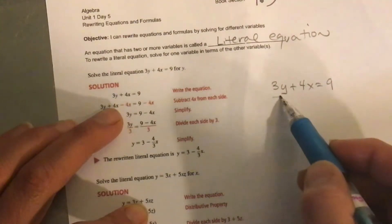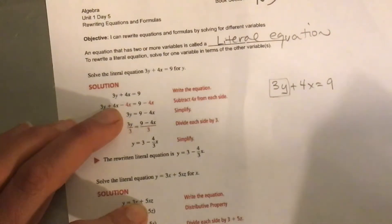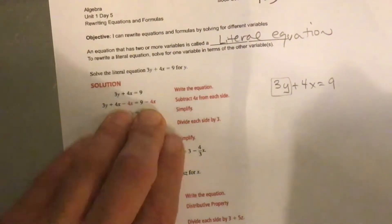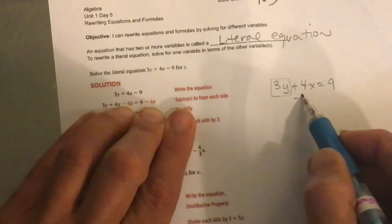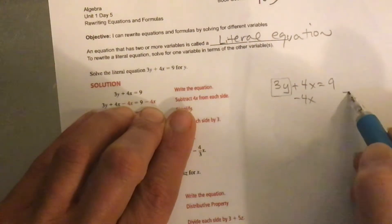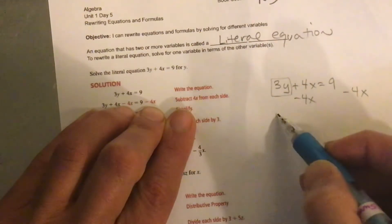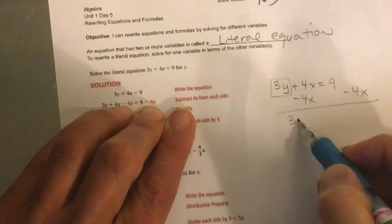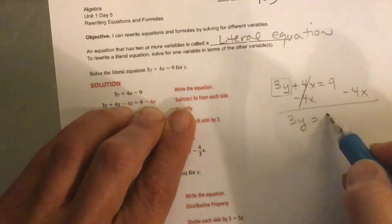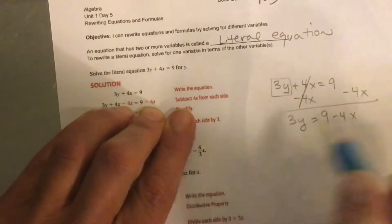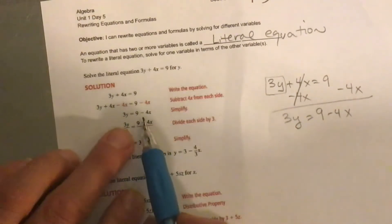So in my head, I think, well, I've got to box that variable term, right? And like they do, they subtract 4x from both sides, right? Because I can move that term just like that. And I can't combine those two, so then I've got 3y equals 9 minus 4x. So they subtracted it from both sides.